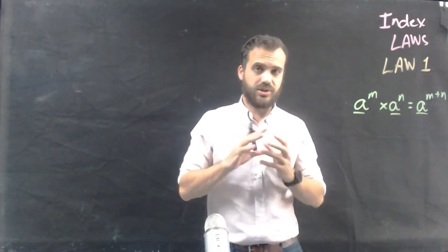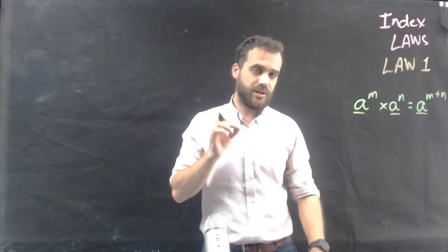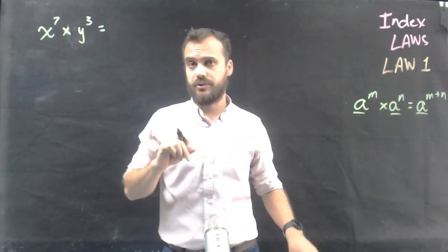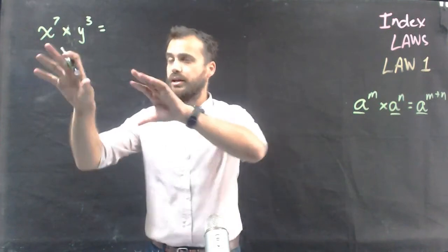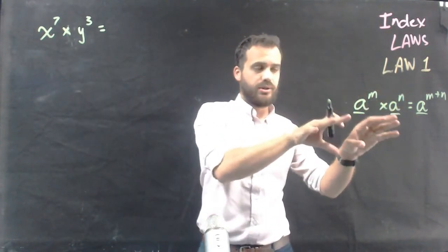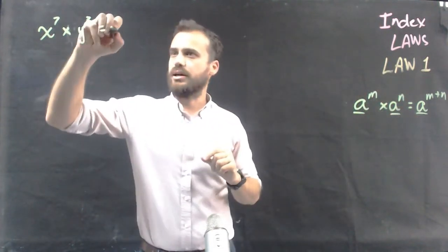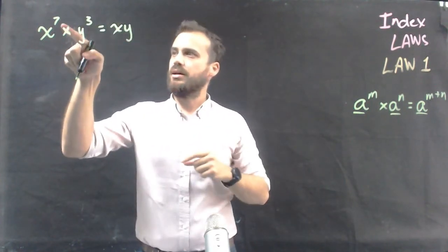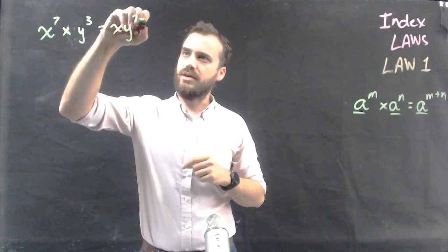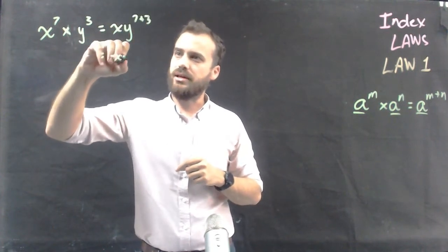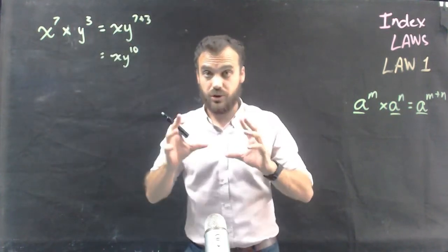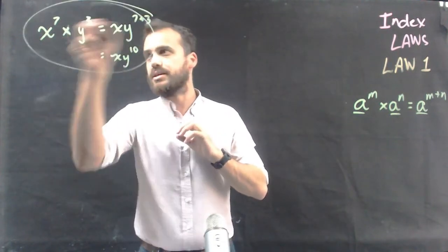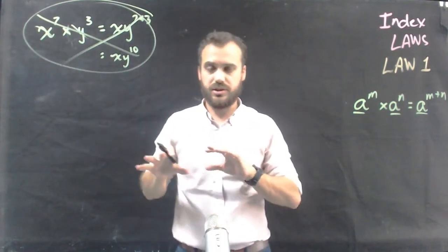So with any index law stuff we're doing, we need to be really, really careful that we don't do something silly. For example, x to the power of 7 times y to the power of 3. Some people might go, 'I can use my index law here,' put the bases together, add 7 plus 3, and get 10. That's wrong — don't do that, because the bases aren't the same. So that would be nonsense.